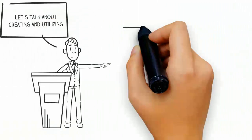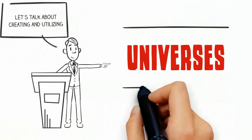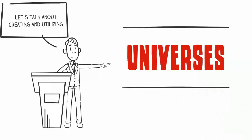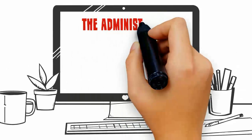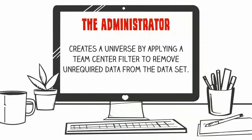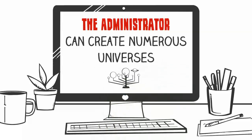Today we will discuss how to create and utilize APM application performance management universes. The administrator creates a universe by applying a Team Center filter to remove unrequired component data from the data set, leaving a Team Center universe tailored to the needs of a particular user or group. The administrator can create numerous universes to create a series of manageable spaces that users can easily switch between to make navigation of the enterprise environment easier for investigation.